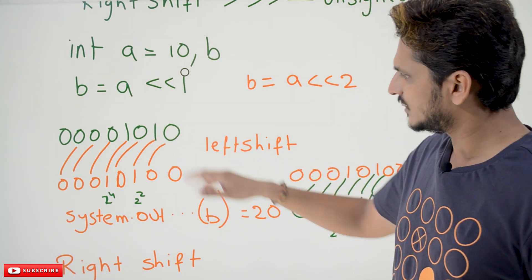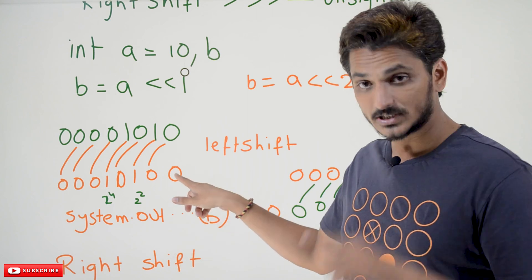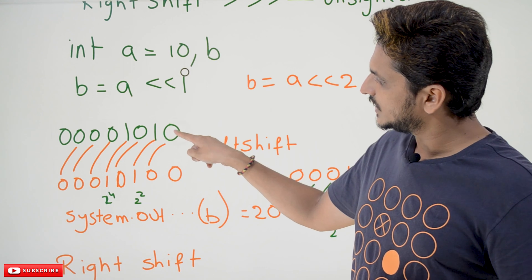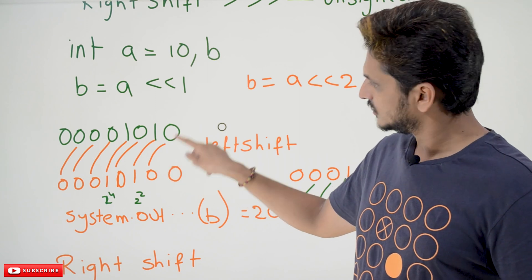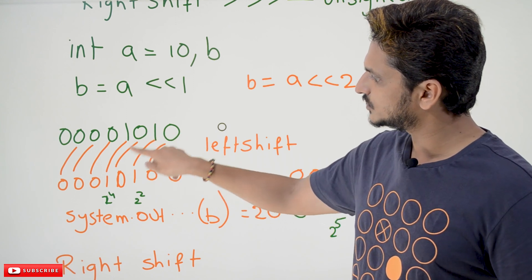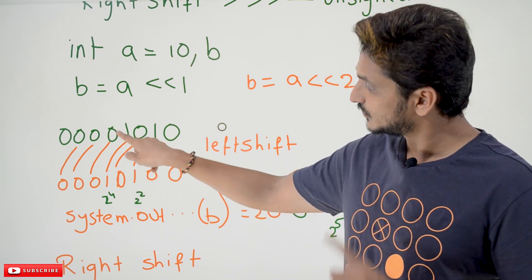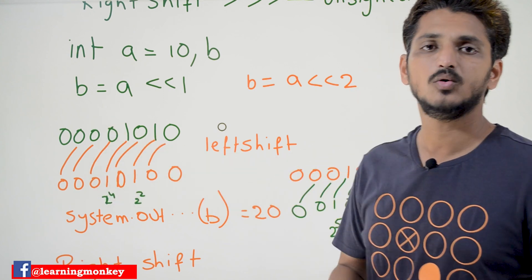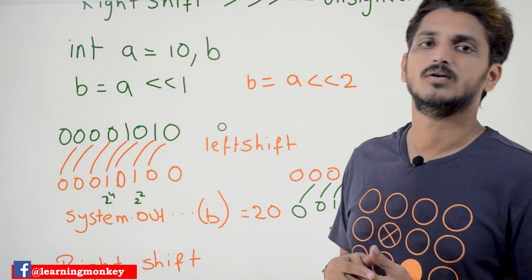Left shift means: the first position bit you place as 0. The actual first bit position is moved to the 2nd bit position. 0 is moved to the 2nd bit position. The 2nd bit position is moved to the 3rd bit position. The 3rd bit position is moved to the 4th bit position. The 4th bit position is moved to the 5th bit, and so on.